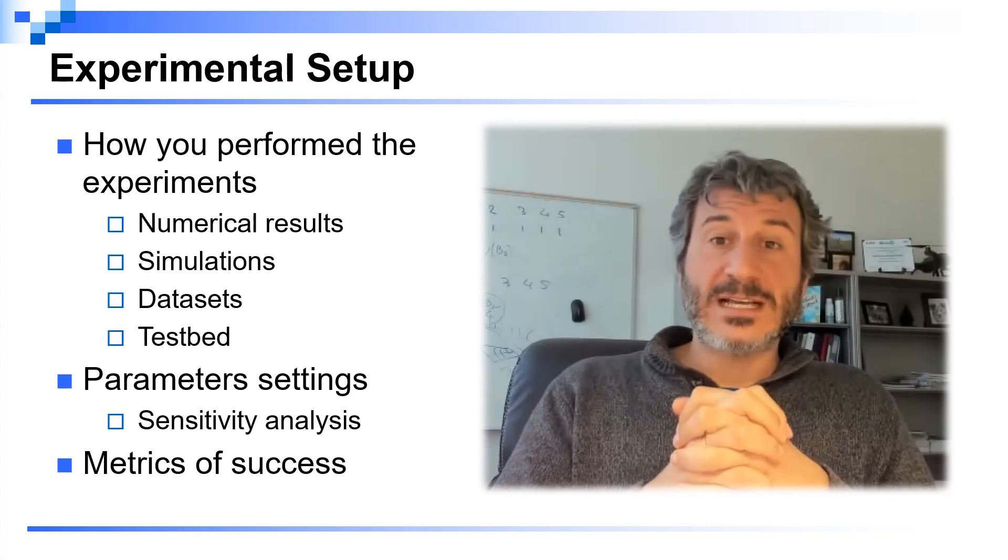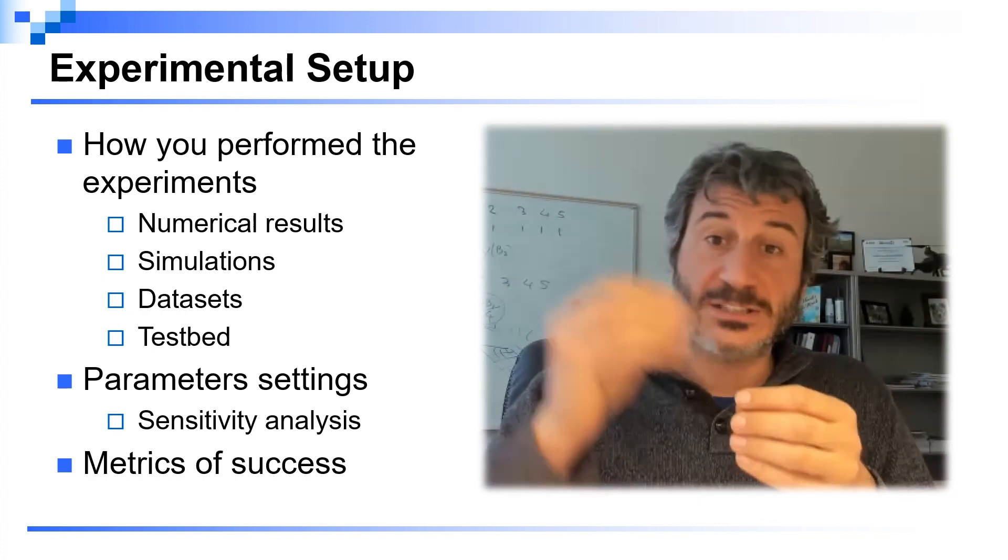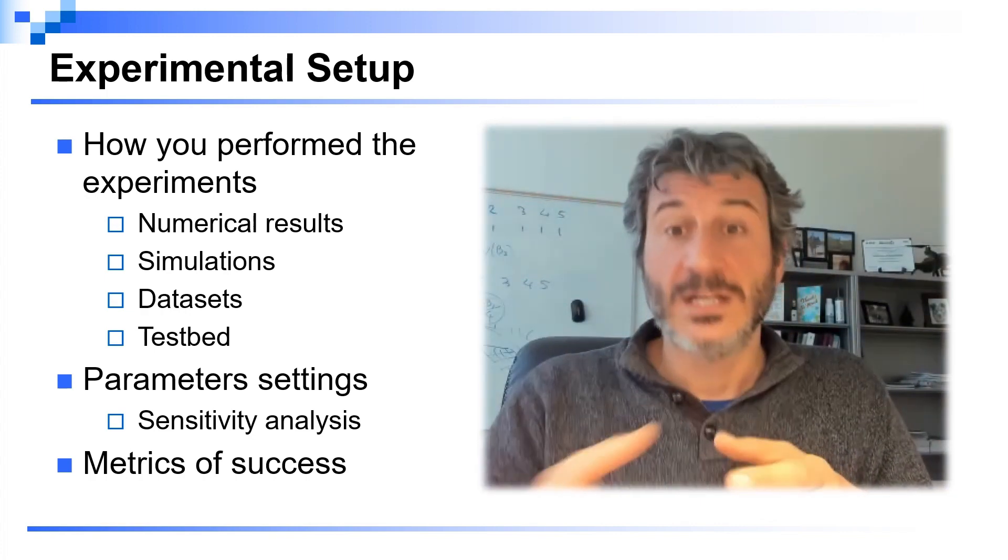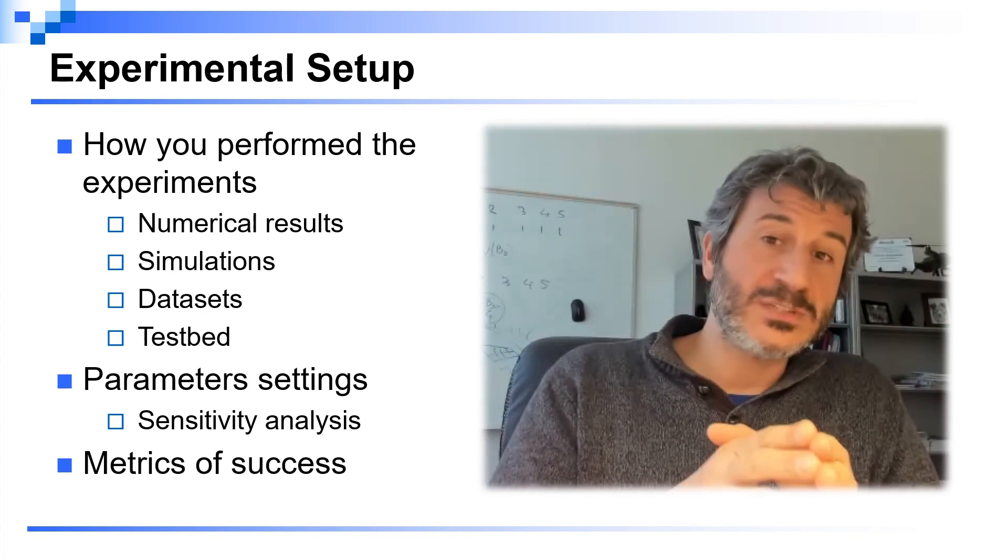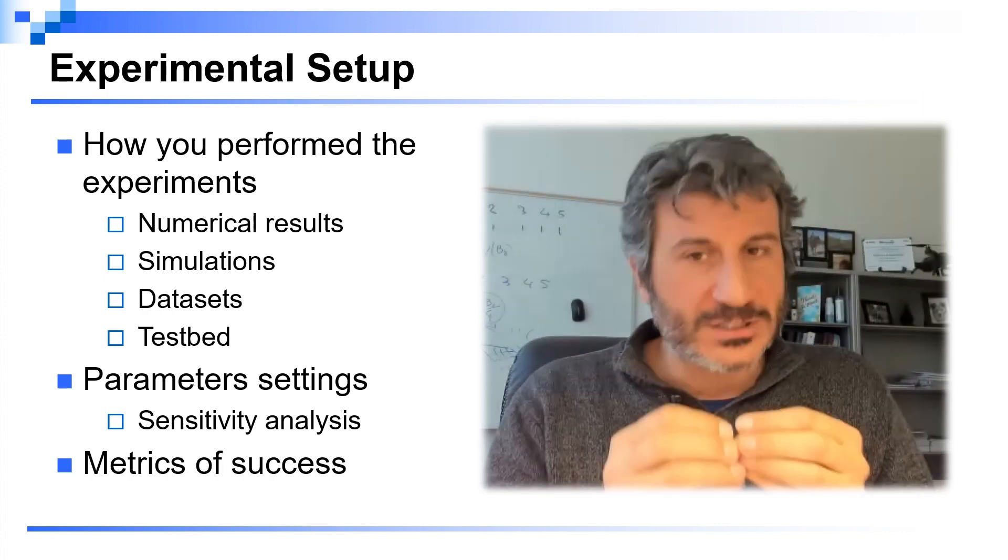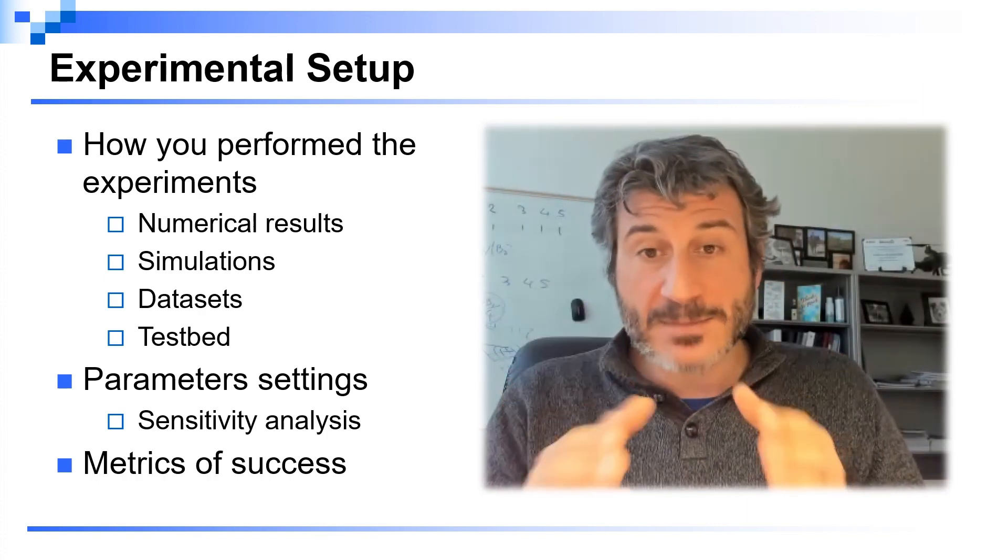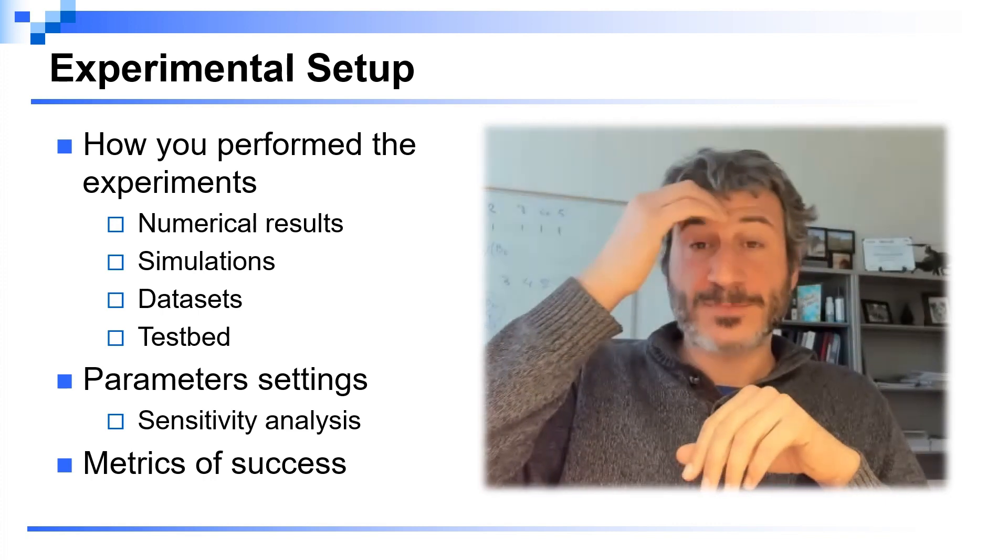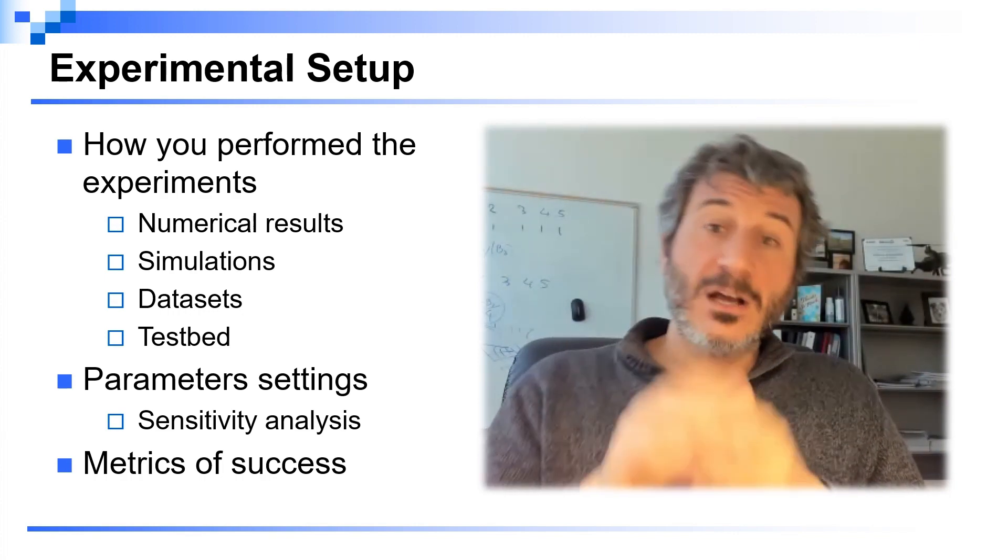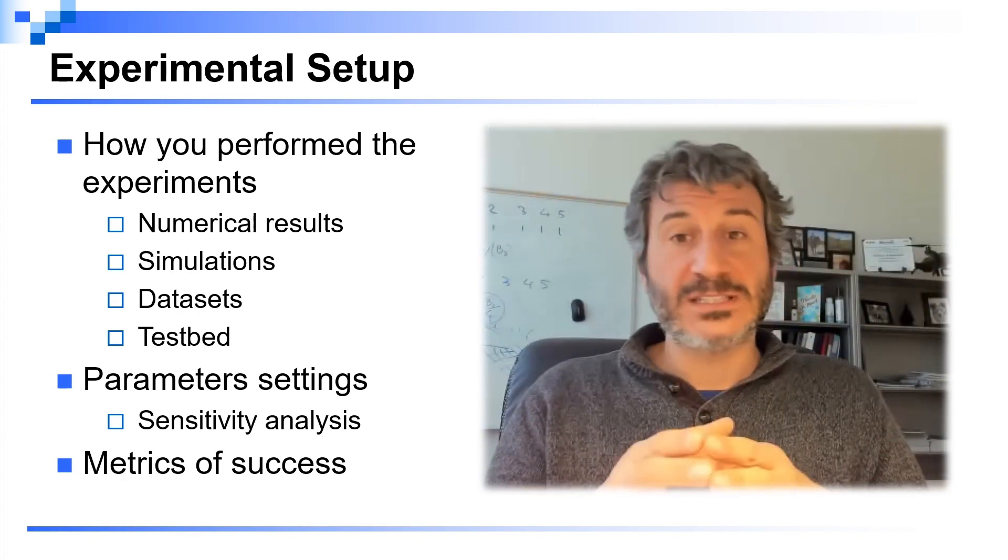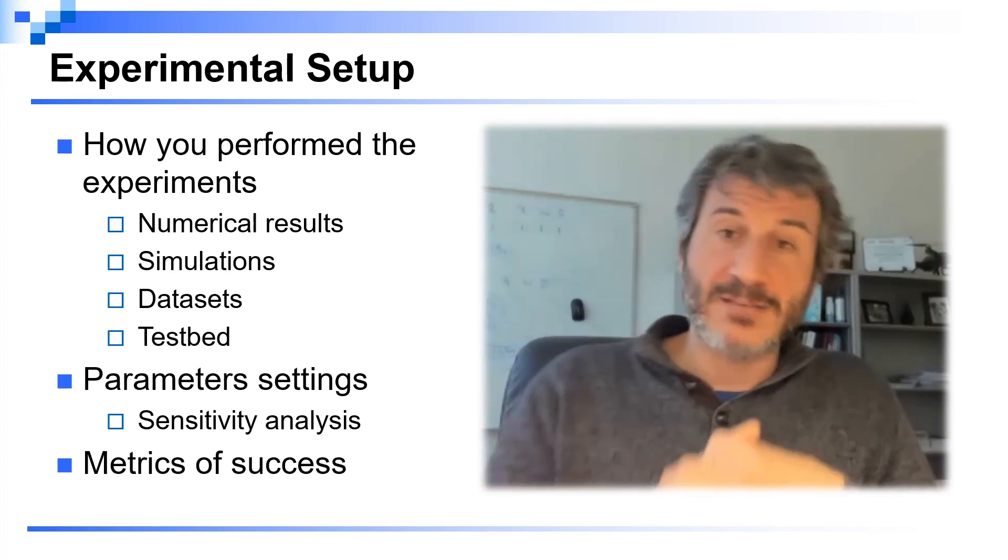This is a good time to provide the parameter settings that you used in the experiments. Solutions are very often parameterized by certain values that determine the actual way they work. If these parameters are extremely important, provide what is called a sensitivity analysis—see what is the impact of the most important parameters on the performance. Also in the experimental setup you may want to mention the metrics of success—what are the experimental performance metrics you're going to consider in the evaluation section.